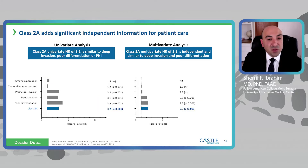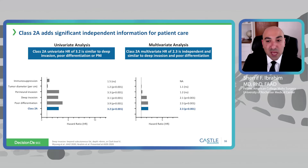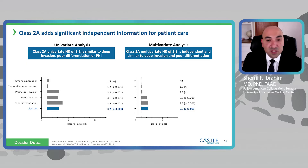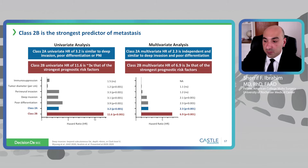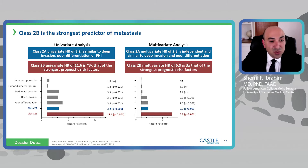Looking at individual risk factors by both univariate and multivariate analysis, a Castle class 2A score remains a statistically significant predictor of metastatic risk with a hazard ratio similar to traditional clinical-pathologic risk factors such as poor differentiation or perineural invasion. When we add a class 2B result, we see a univariate hazard ratio of 11.6 — three times that of the strongest prognostic risk factors — and it remains statistically significant in multivariate analysis. A class 2B GEP result is extremely more predictive than the highest clinical-pathologic staging factors alone.